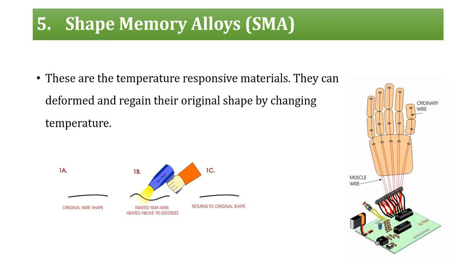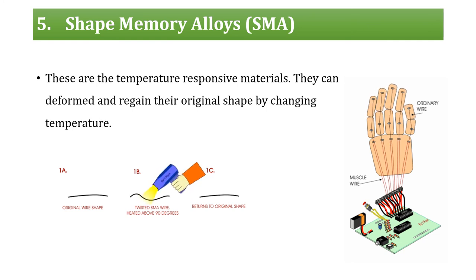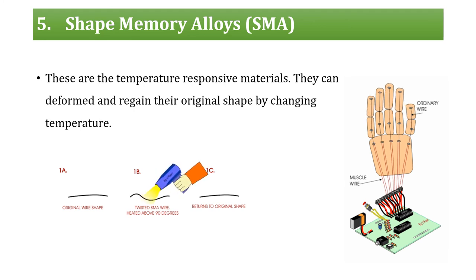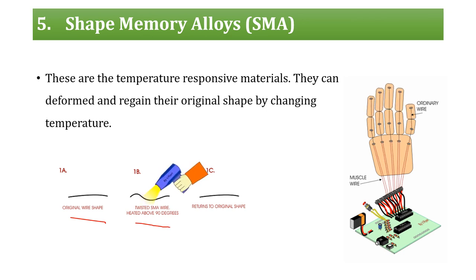The next type of smart material is shape memory alloy. As the name implies, it stores the memory of its shape within itself. These are temperature-responsive materials — when there is a change in temperature they can get deformed or regain their original shape. For example, a wire in its original shape, when twisted due to load or environmental conditions, will regain its original shape when heated.